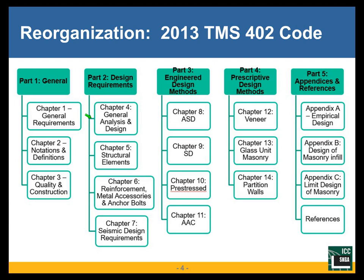Then we have some design requirements covering general analysis and design, including things like determining modulus of elasticity for masonry. We have a chapter on structural elements that focuses primarily on beams and columns with a little bit on walls. Chapter six deals with reinforcement, metal accessories, and anchor bolts.